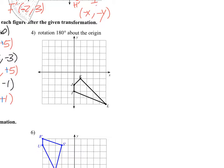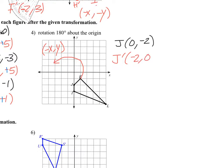180 degrees about the origin — this is like problem number 2. Where was J? J is at 0, negative 2. So for J prime: if I go 180 degrees, direction doesn't matter here. That's 2 quadrants. In this quadrant we have negative X, positive Y. So I switch my X and Y. The X has to be negative, the Y is positive — in this case 0 doesn't change. Where's I? I is at 0, negative 3. So I switch them: that's negative 3, 0. X has to be negative, Y is positive — again 0, so that doesn't matter.